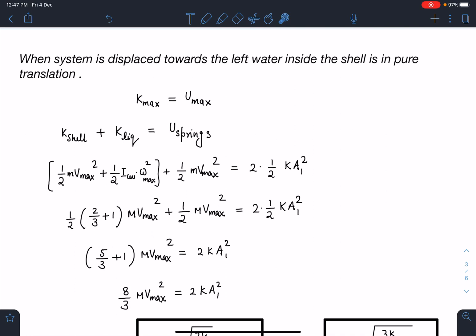That will equal potential energy stored in the springs. I can write the kinetic energy of the shell as 1/2 Mv_cm² plus 1/2 I_cm*omega² and kinetic energy of liquid as 1/2 Mv². I can write this as 1/2 Mv_max² and that should equal double of 1/2 KA₁².